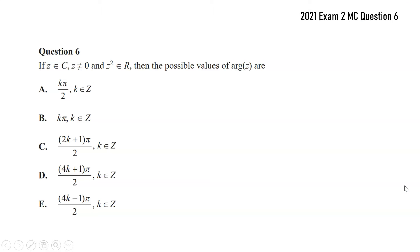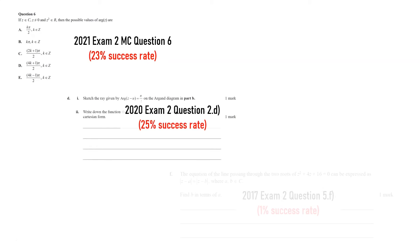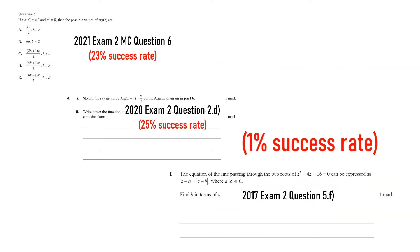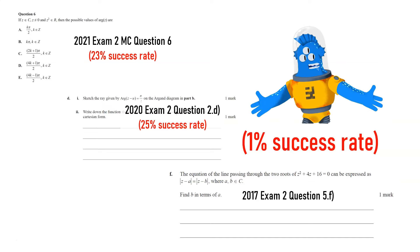This multiple choice question on complex numbers from the 2021 Specialist Maths exam was the worst answered multiple choice question on the exam. We'll look at what made it so tricky for students, and we'll also have a look at two more complex numbers questions, this one from 2020, and this one from 2017, which had a 1% success rate. 1%? That is out of this world!